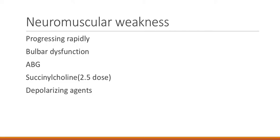We should avoid depolarizing agents in patients immobilized for a prolonged period of time or patients with Guillain-Barré syndrome. Depolarizing agents cause depolarization, which normally leads to potassium leakage out of cells — in a healthy subject this raises potassium by about 0.5 to 1 mEq, which is not significant. However, in Guillain-Barré or prolonged immobilization, the leakage is more severe due to up-regulation of receptors that weren't previously stimulated. The increased potassium level can cause arrhythmias and can be lethal.